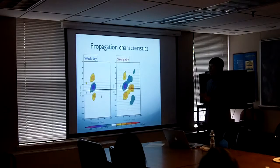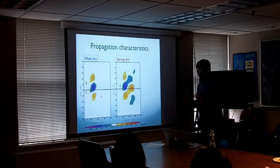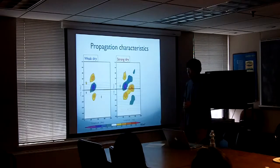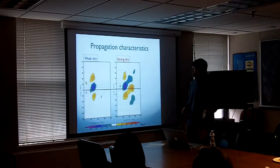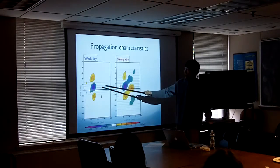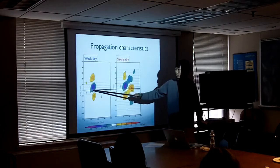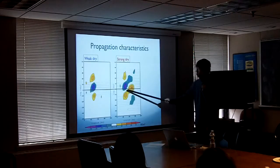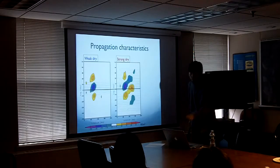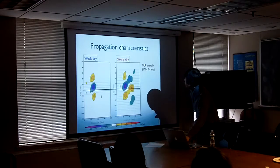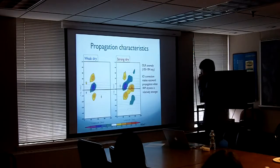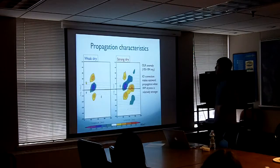This is the averaged Hovmöller diagram of 20 to 100 day bandpass-filtered OLR anomalies, consistent with the table shown before. Weak dry events do not make propagation as a whole, while strong dry events do make propagation. This is OLR averaged between 10°N to 10°S, and the conclusion is similar to the previous table.